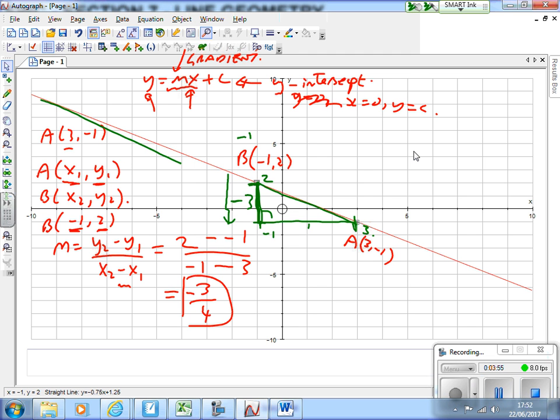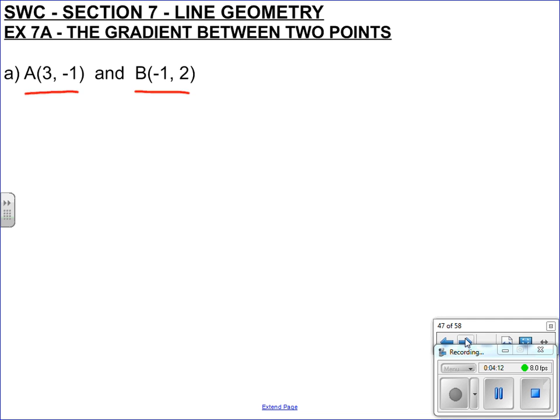Whereas here we've got an x-coordinate of 3 and an x-coordinate of -1 - the difference between them is 4. And as x is moving that way, if we go from left to right, we'll say that's positive. So you can see that the gradient is change in y over change in x.